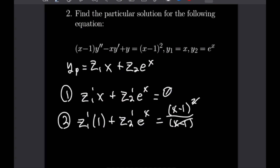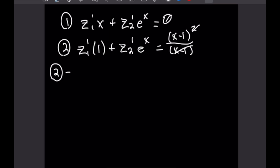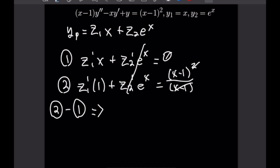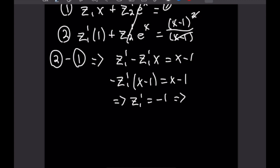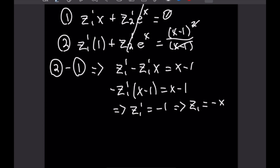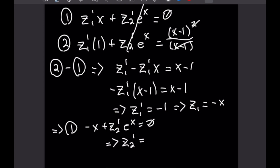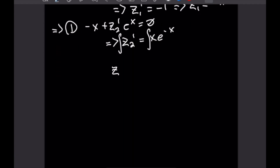Calling these equation 1 and equation 2, we subtract equation 1 from equation 2. The z2 terms cancel, leaving: z1' - z1'·x = x-1, which factors as -z1'·(x-1) = x-1. Therefore z1' = -1, and integrating gives z1 = -x. Substituting into equation 1: -x + z2'·e^x = 0, so z2' = x·e^(-x).